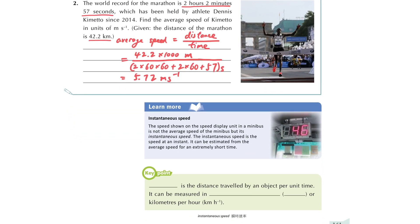There is one more concept: instantaneous speed. If you have ridden in a van, you can see the speedometer display changing as the car moves. That number shows the speed at a particular moment — we call it instantaneous speed. To summarize: speed equals distance traveled per unit of time, and we use meter per second (m/s or ms⁻¹) or kilometer per hour as the unit.